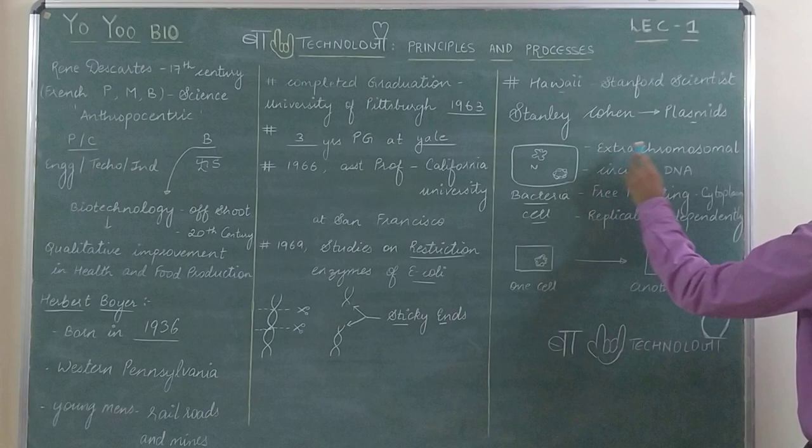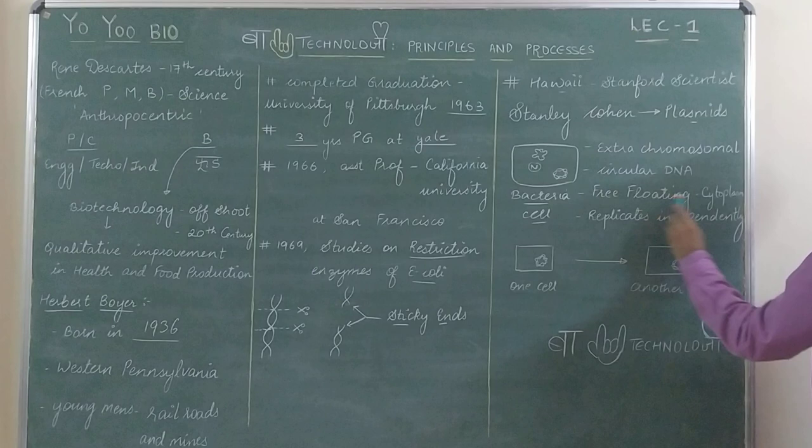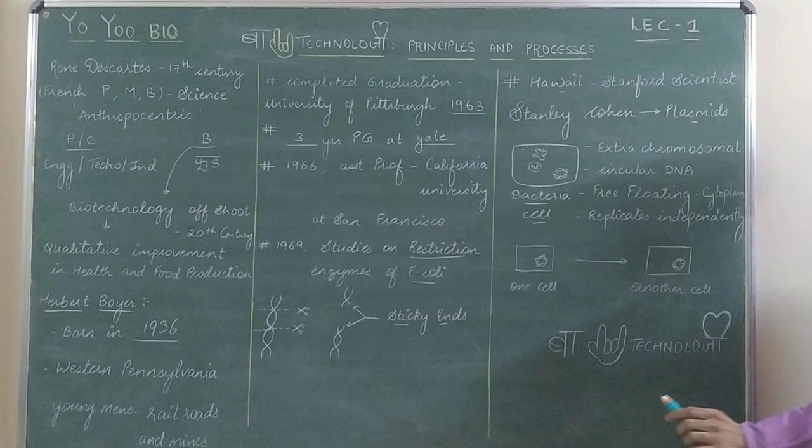Point number one: extra-chromosomal — meaning extra material beyond the nucleoid. Point number two: circular DNA — our own DNA is linear, but here the DNA is circular. It is free-floating in the cytoplasm, and this plasmid replicates on its own — it divides independently.